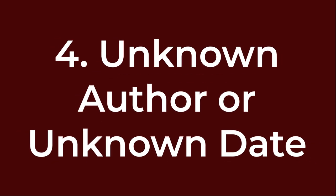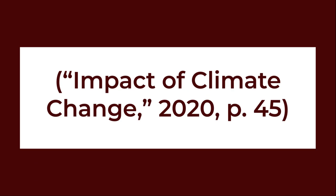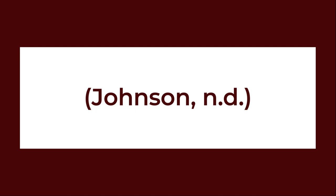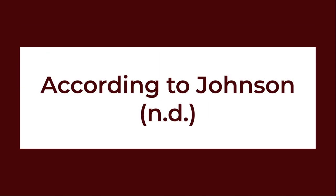Number four: unknown author or unknown date. If the source has no identifiable author, use a shortened version of the title in quotation marks. For example: ("Impact of Climate Change," 2020, p. 45). If the publication date is unknown, use the abbreviation for no date — n.d. — with a period following each letter. For example, your parentheses would contain: (Johnson, n.d.). If you mention the author in your signal phrase, n.d. would be the only thing in parentheses. For example: According to Johnson (n.d.).